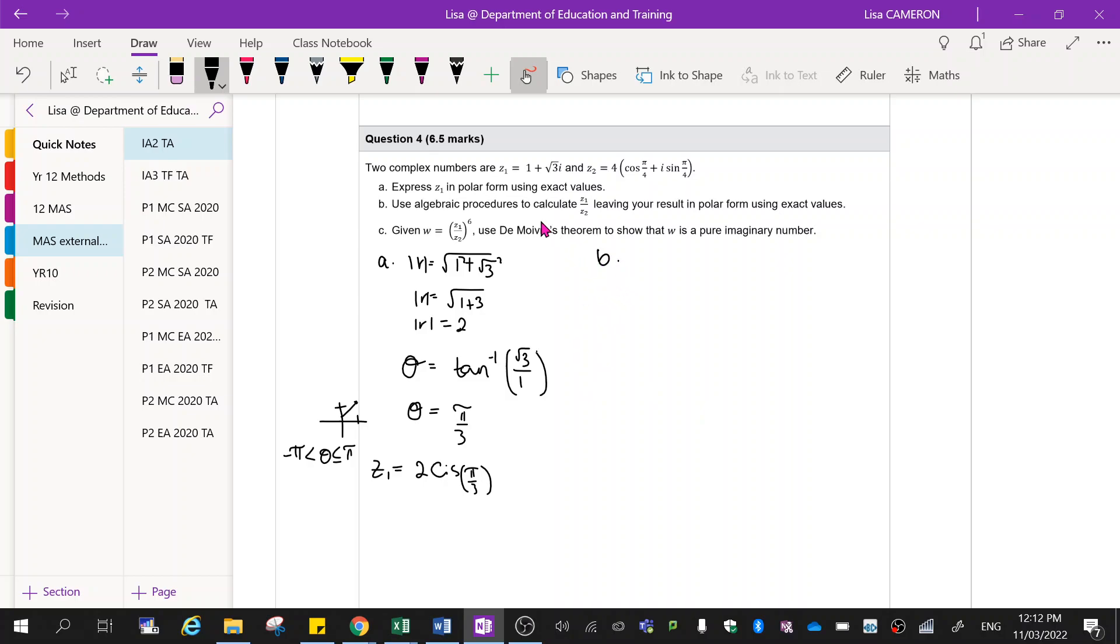Part B. Use algebra to calculate z1 divided by z2 and leave your result in polar form using exact values.